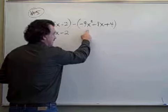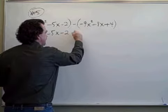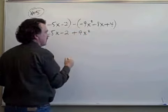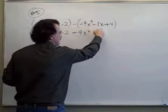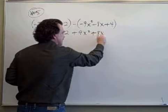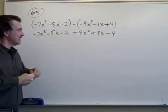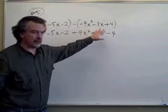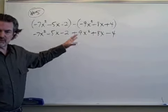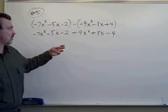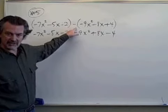The opposite of minus 9x squared is plus 9x squared. The opposite of minus x is plus x. The opposite of plus 4 is minus 4. If you see again how each of these terms had their signs in front of them changed to the opposite of what it was, that's what the minus sign did.